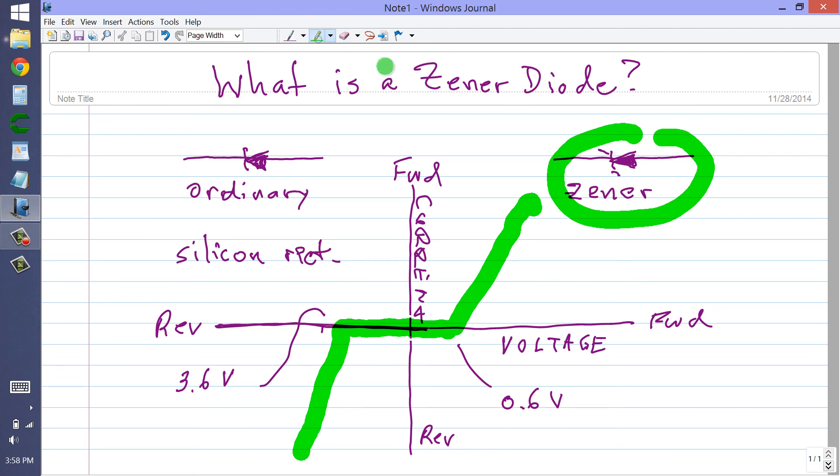Now, why would you want to have a diode that breaks down more easily in the reverse direction or at a lower voltage? Well, there are a lot of reasons why, and in some other future videos, I will try to get into some specific applications of Zener diodes, where ordinary diodes simply would not work.